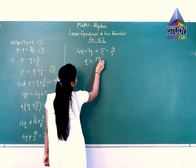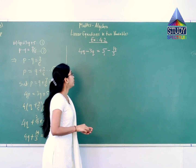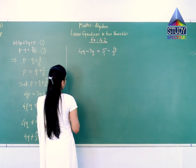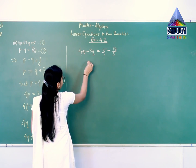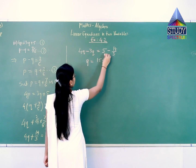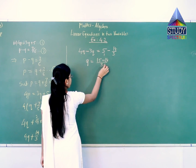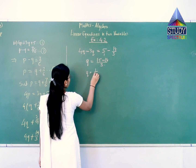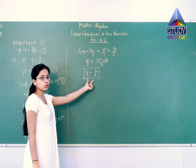5 times 3 is 15, minus 1 into 14. Let us calculate this fraction. 4Q minus 3Q will be 1Q — no need to write 1. 5 times 3 is 15, minus 14, giving 1, upon 3. So Q is equal to 1 upon 3. Very simple — we got the value of Q.